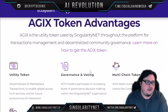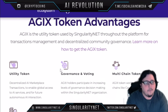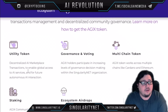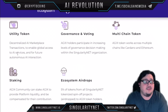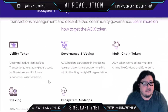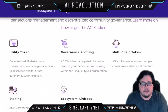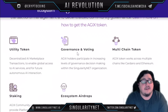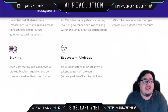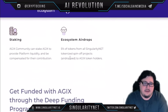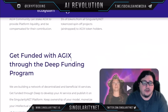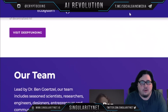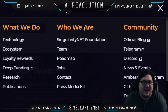In terms of token advantages, AGIX is a utility token enabling decentralized AI marketplace transactions for global access to AI services. It's a multi-chain token that offers governance and voting, and even ecosystem airdrops — with five percent of tokens from all ecosystem projects going to AGIX token holders.